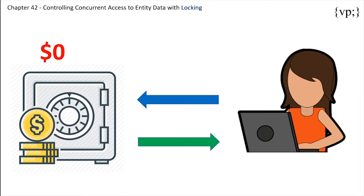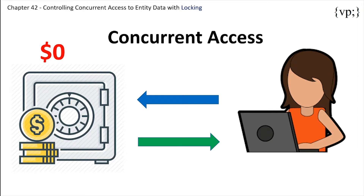This can result in an error which would make Jackie frustrated, or a worse result of Jackie actually getting more money where there isn't any. This situation is called a concurrent access — when two parties are trying to access the same data.